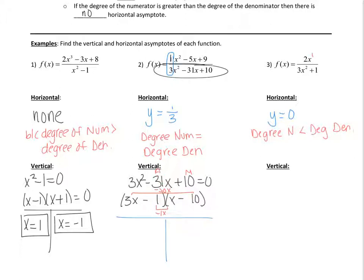Now we do a t-chart. For 3x minus 1 equals zero: add 1 to both sides, divide by 3 — that gives x equals one-third. For x minus 10 equals zero: add 10 to both sides — that gives x equals 10. So the vertical asymptotes are x equals one-third and x equals 10.